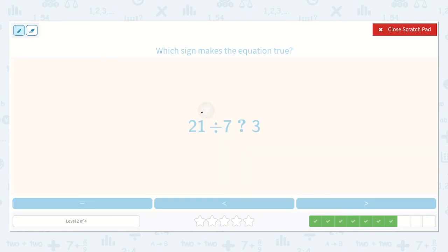Here we have 21 divided by 7. And then we have 3. So let's count by 7's. 7, 14, 21. That's 3. Okay, so 3 is equal to 3. So it would be equal.